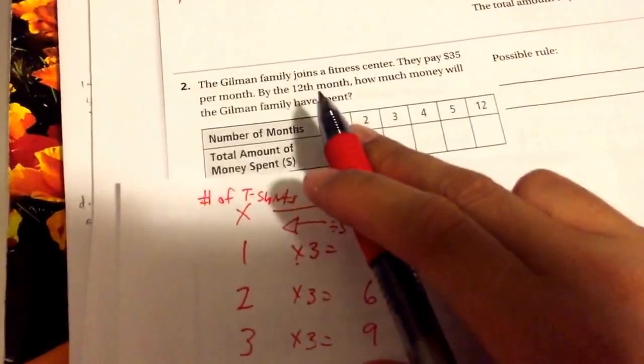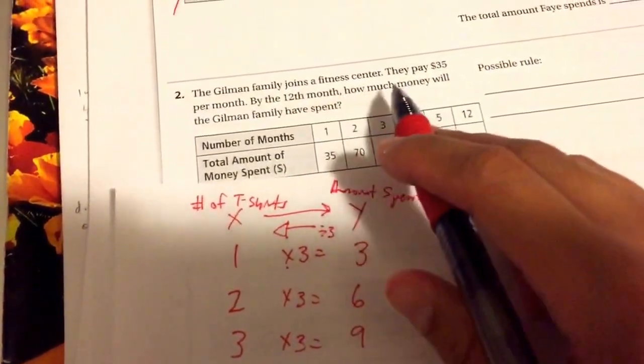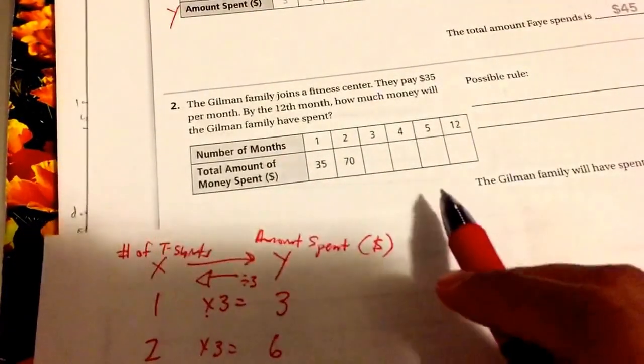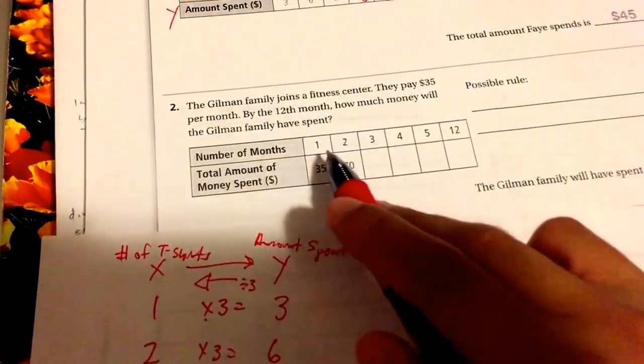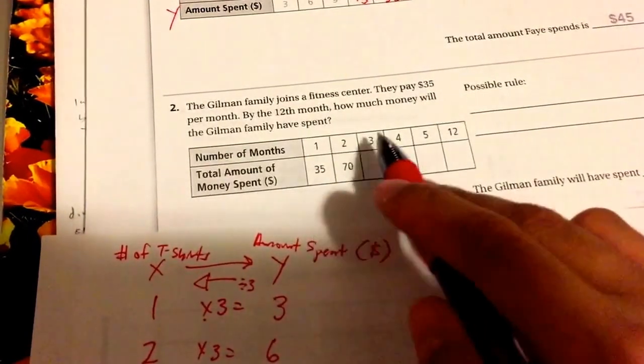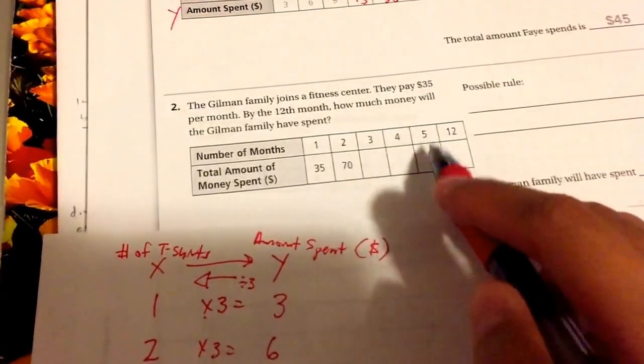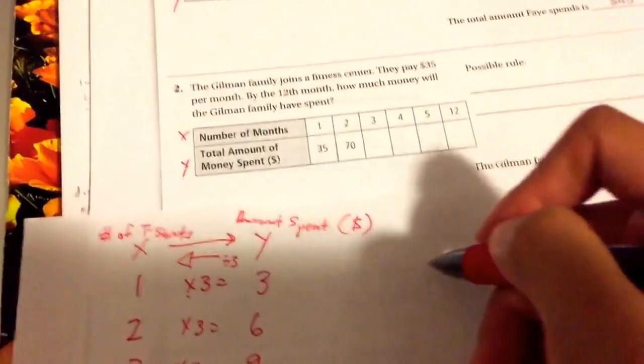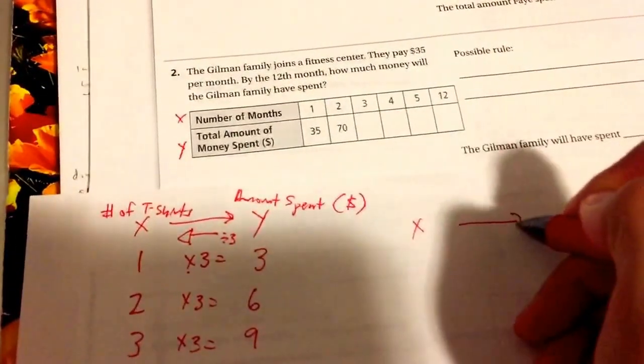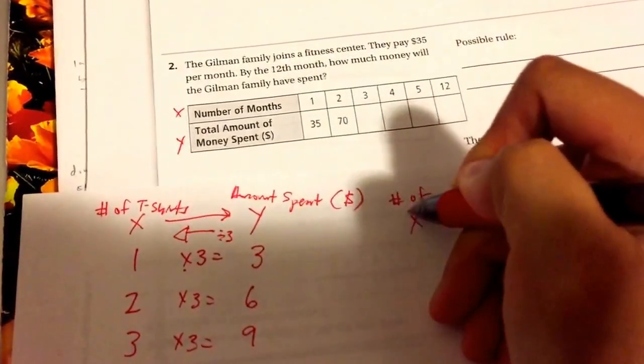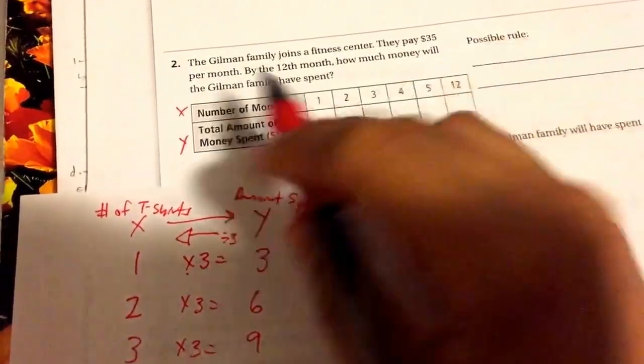Number two will be done the same way, and although I won't solve it for you, I will start you off. The Gilman family joins a fitness center. They pay thirty-five dollars per month. By the twelfth month, how much money will the Gilman family have spent? So each month—month one—it's thirty-five dollars. Month two, it's now seventy dollars. What would it be for three months, four months, five months, and twelve months? Here's our X and here's our Y. Don't forget your X goes here, your Y goes here.